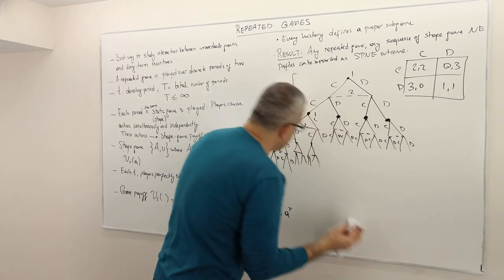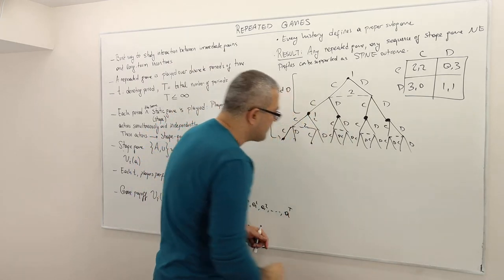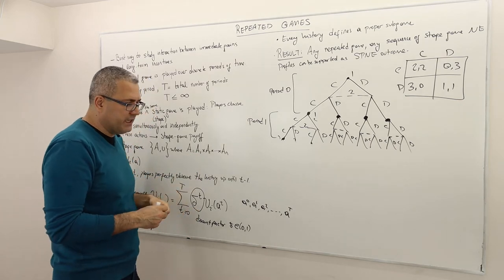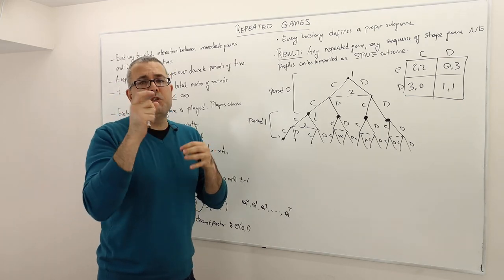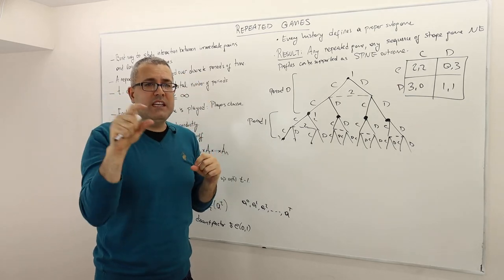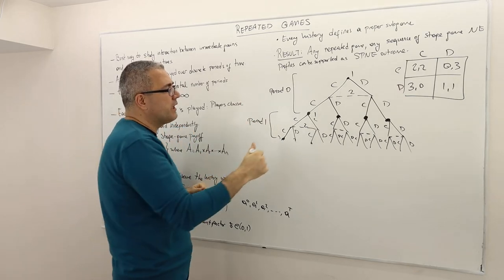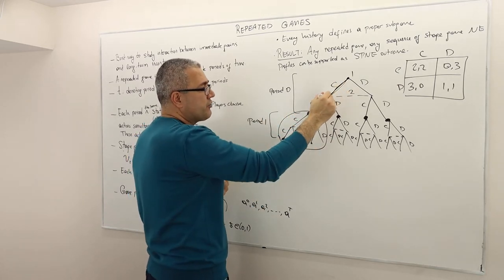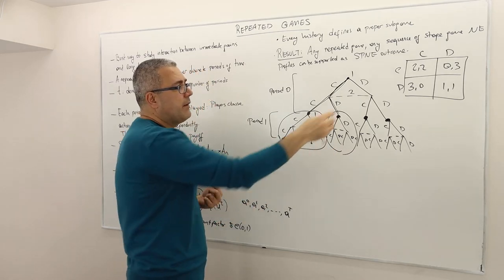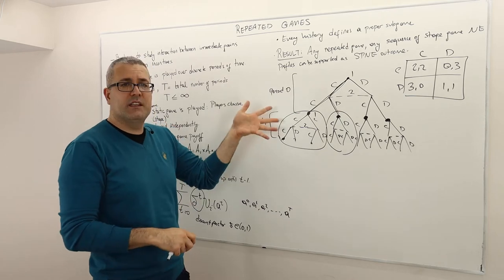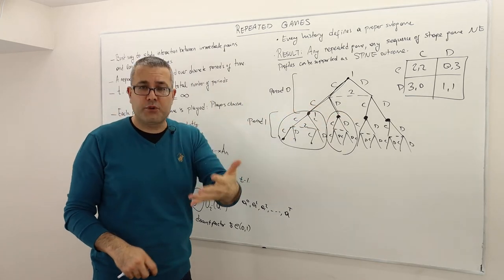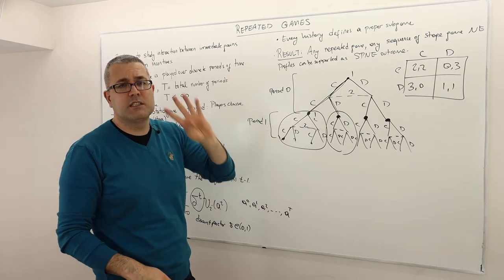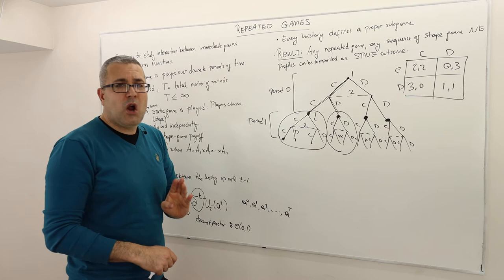Let's erase the extra parts and assume the game ends in two periods. Every history defines a proper subgame. The history is basically what happens in each period — the action profile at each period gives us a history. So CC is one history giving one proper subgame, CD gives another, and same for DC and DD. So we have four histories and four proper subgames in this twice-repeated game. The game itself is also a subgame, but we don't call it a proper subgame.